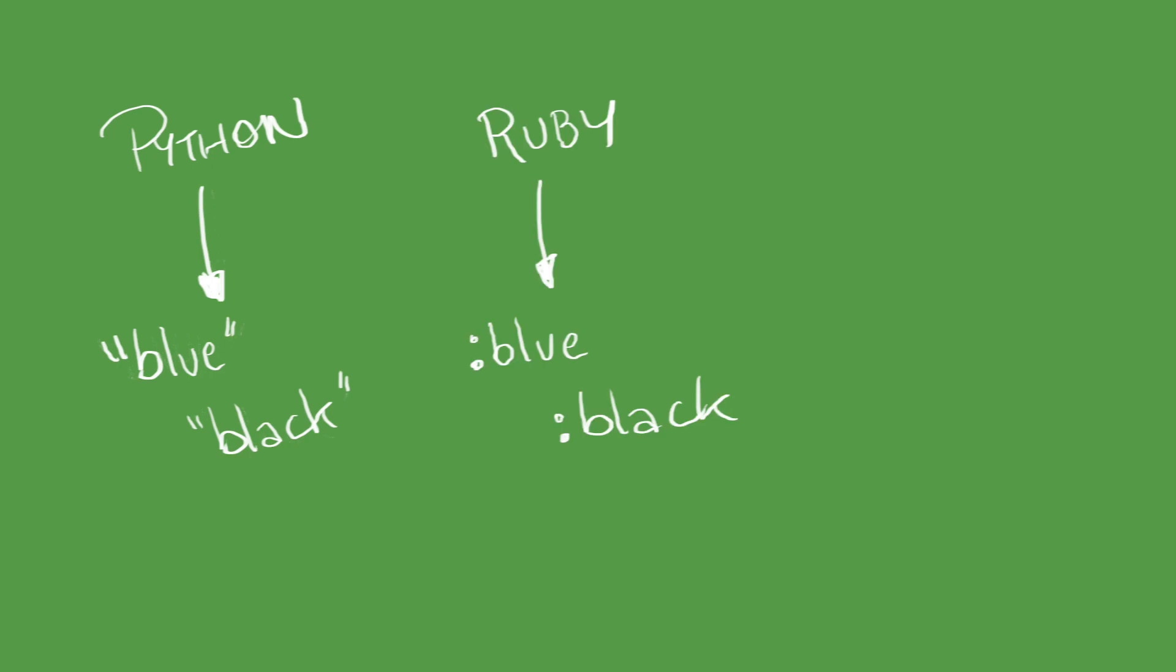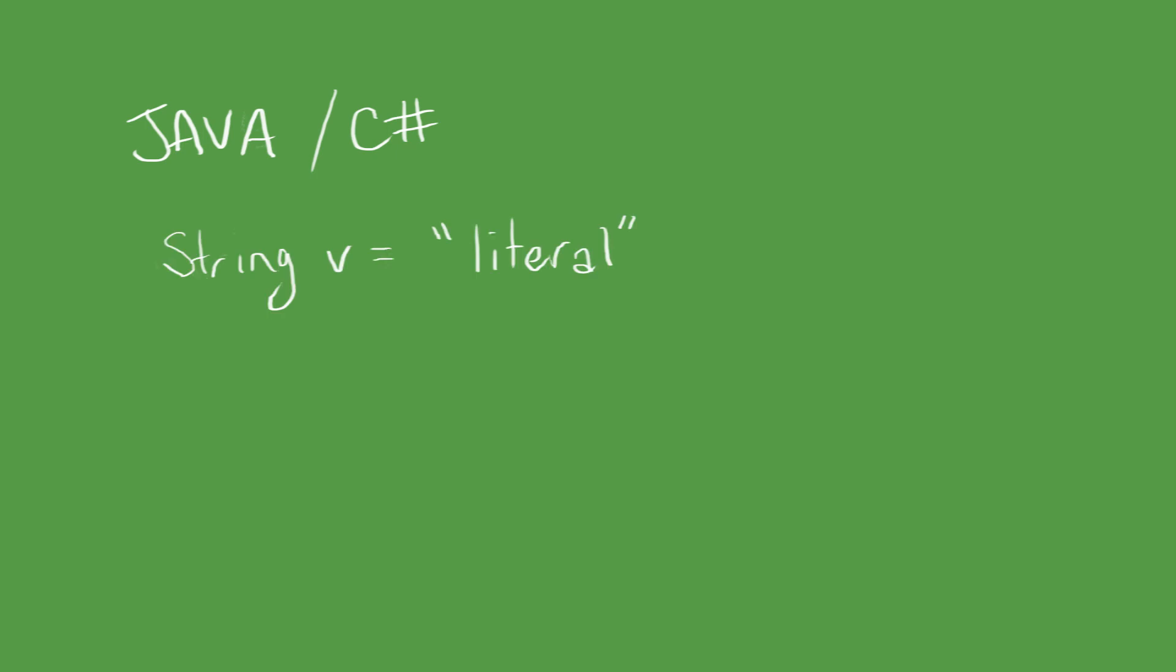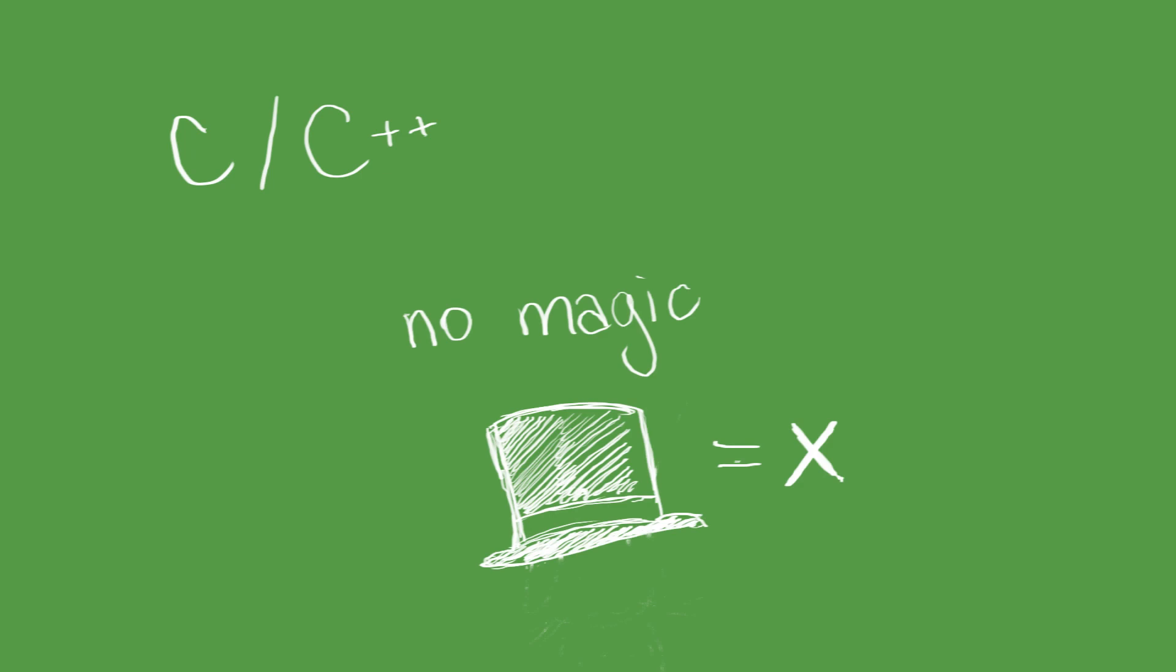Java and .NET languages intern all literal strings as a compilation step. Strings read from files or the user during runtime would need to be interned manually. You get no such magic, however, from C or C++, lower level languages where you are expected to manage such performance improvements yourself.